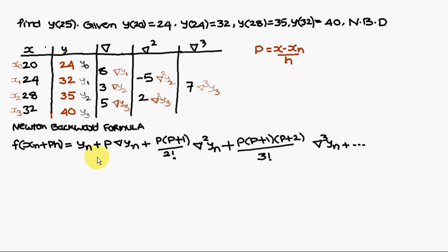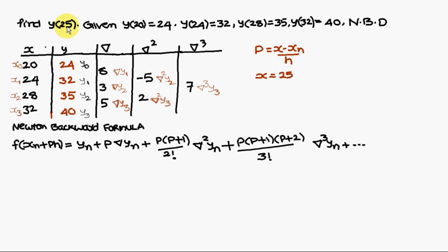To remember which values to substitute — yn, nabla yn, nabla squared yn, nabla cubed yn — follow the bottom diagonal of the difference table: 40, then 5, then 7. The p value formula is p = (x − xn)/h. Here x = 25, xn = 32, h = 4, so p = (25 − 32)/4 = −1.75.